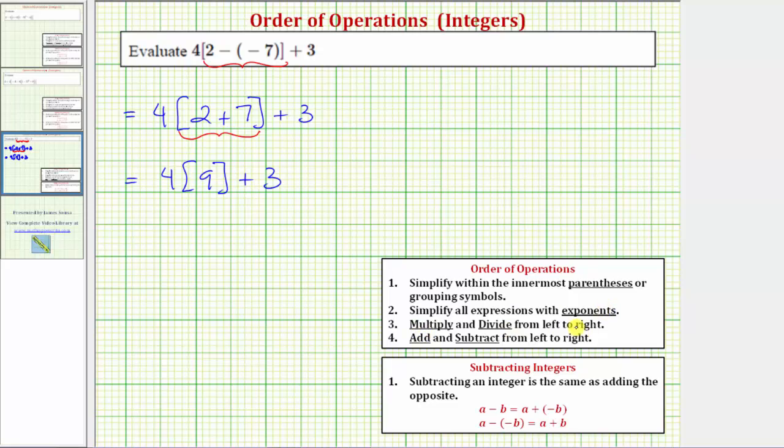Step three, we multiply and divide from left to right, which means multiplication and division have the same priority. We perform multiplication and division, again, as it occurs from left to right. So our next step is to find this product here. Four times nine is equal to 36.